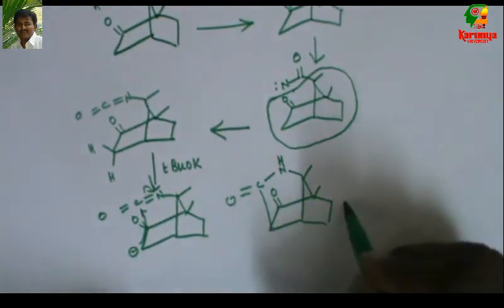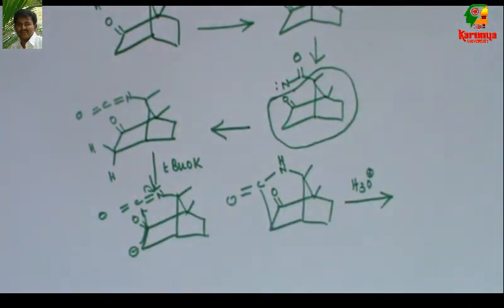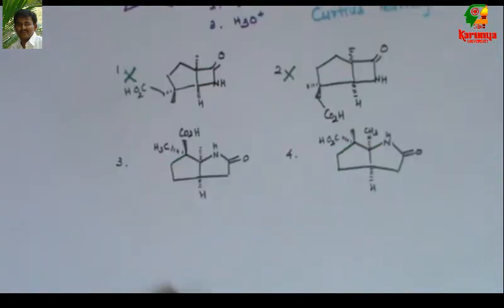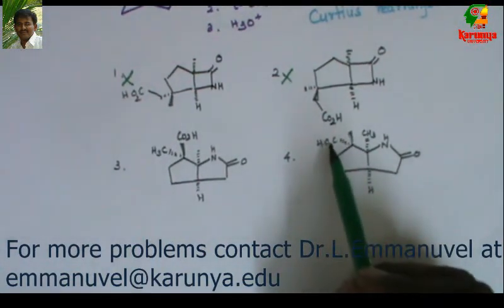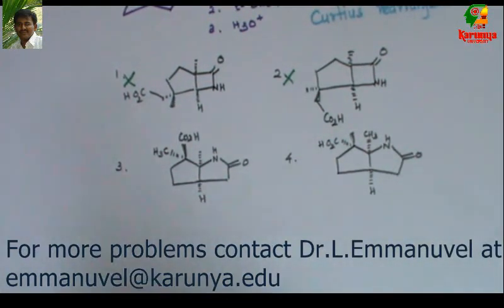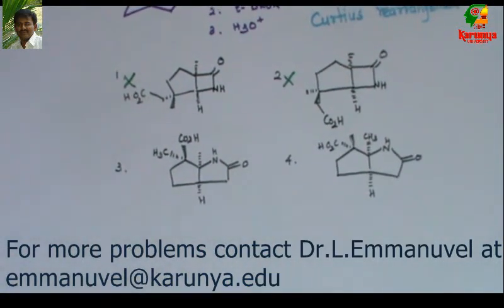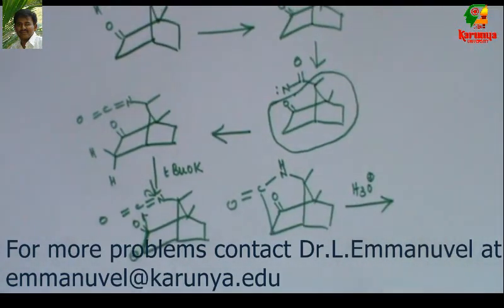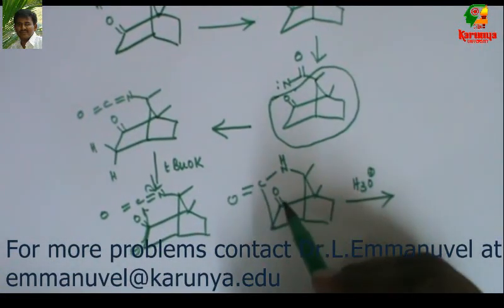Now the last condition is hydrolysis. I'm not sure whether it is acidic or basic condition. Since they have mentioned H3O+, it should be acidic. From the given options, it is clear that the carbonyl group is getting converted into carboxylic acid. Only then will we get the product. That is only possible if the nucleophile attacks here and opens up the ring.